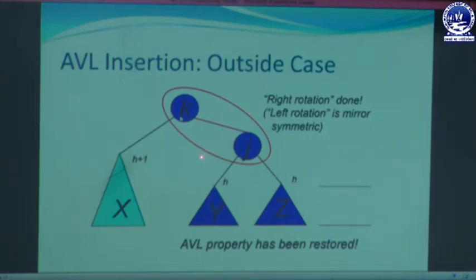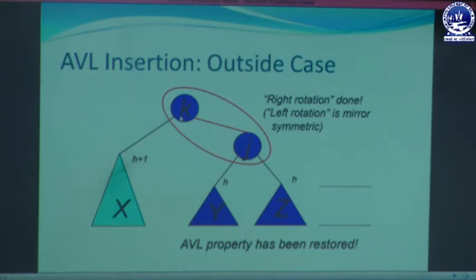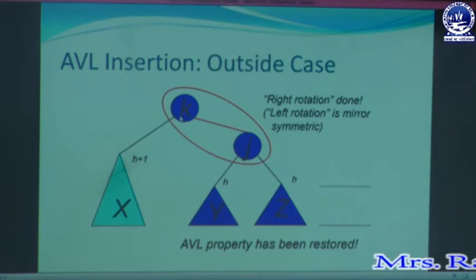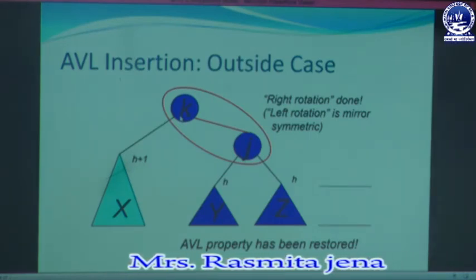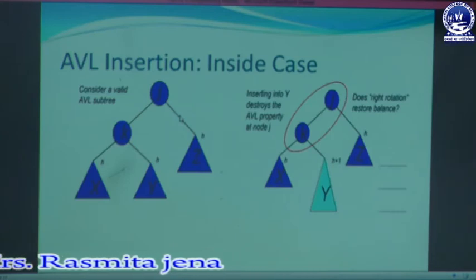So this tree satisfies the AVL tree property by rotating with right rotation. This is one case of the outside rotation. Another outside rotation is left rotation, which is required when we insert a node at the right subtree of the right child. In the same process it needs left rotation. These two — right rotation and left rotation — are the single rotations for outside cases.